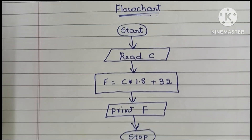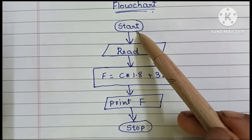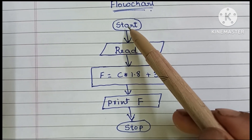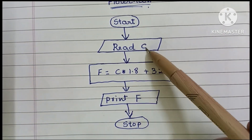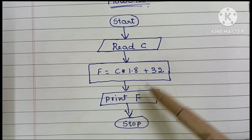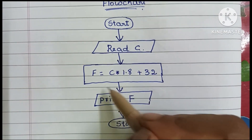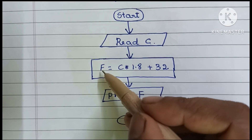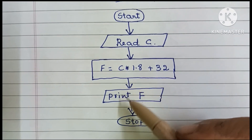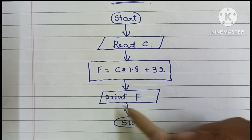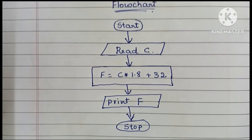To recap the flowchart: Start and Stop statements are written within oval shapes. Input and output values are written within a parallelogram shape — here, read C. Calculations are done within a rectangular shape — write F = C × 1.8 + 32. Then print F and stop.